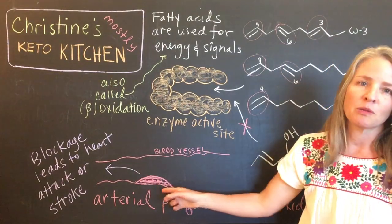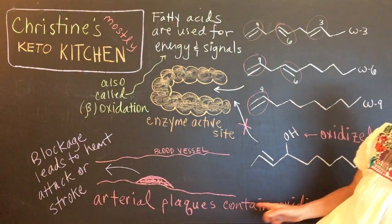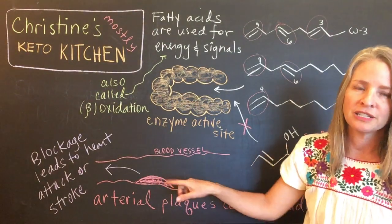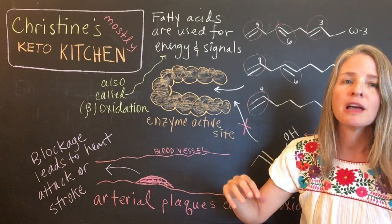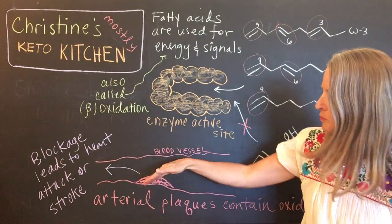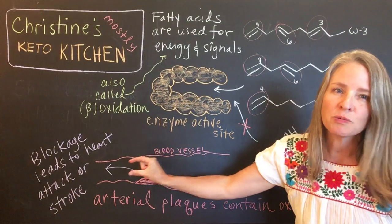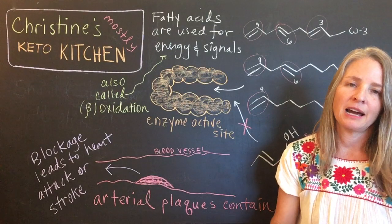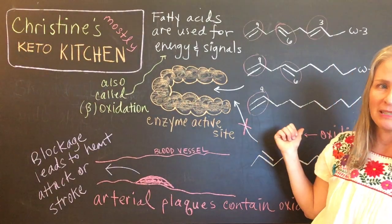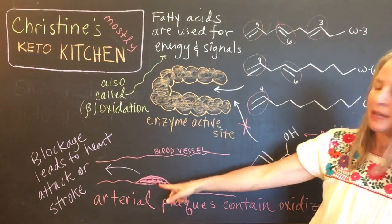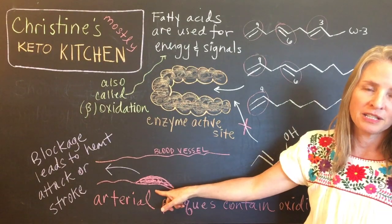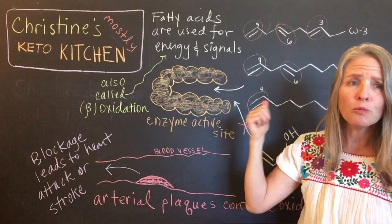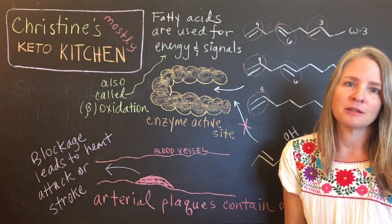There's quite a bit of evidence that arterial plaques contain oxidized fatty acids. I drew a blood vessel here, and here's an arterial plaque that's starting to grow. Eventually this thing will grow, pull off, and go to a place where the blood vessel is more narrow. When it causes a blockage, that's how you end up with a heart attack or stroke. So there's definitely a connection between these oxidized fats being a component of arterial plaques, which can then lead to heart disease and stroke. We do want to avoid the number of oxidized fats that we eat.